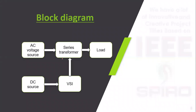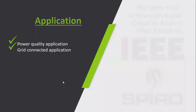In the block diagram, AC voltage is given to the series transformer. This series transformer is comprised of the voltage source inverter and is connected to the load. The DC source provides excitation to the voltage source inverter.